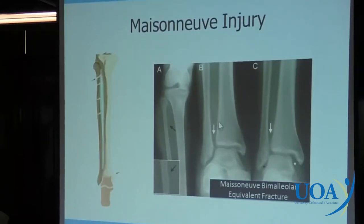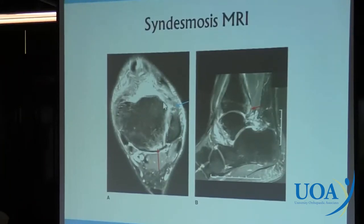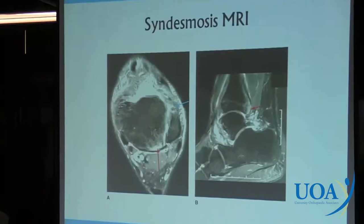MRIs can be obtained. In this case there is a lot of edema — the white signal. The anterior inferior tibial fibular ligament should be seen as a black line here but is not visible, indicating an injury to the anterior aspect of the syndesmosis. The posterior aspect — this black line — is the posterior syndesmosis and is intact, though you do see bone bruises.